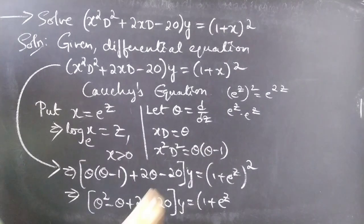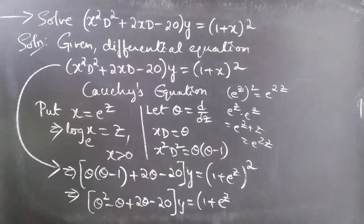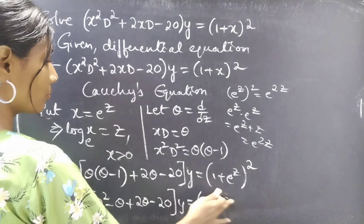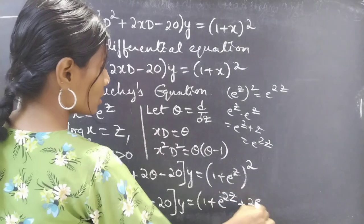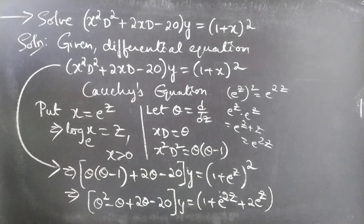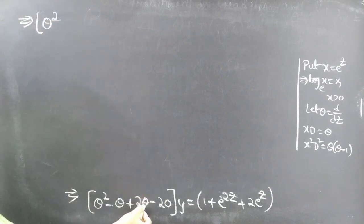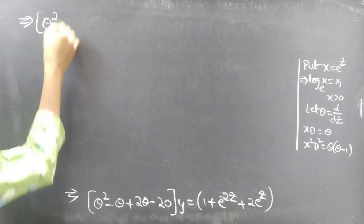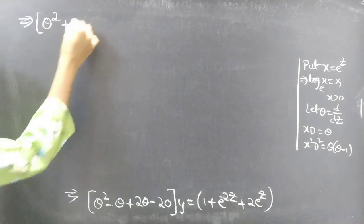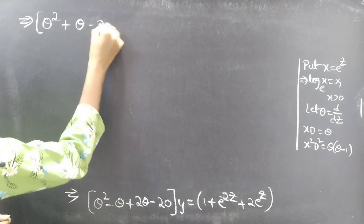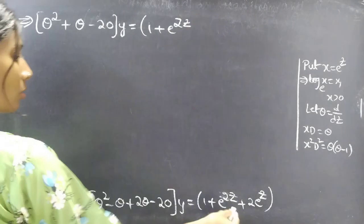Note that e power z whole square can be written as e power 2z. Expanding, we get e power z whole square equals e power 2z plus 2 e power z. So the equation becomes theta squared plus theta minus 20 into y equal to 1 plus e power 2z plus 2 e power z.